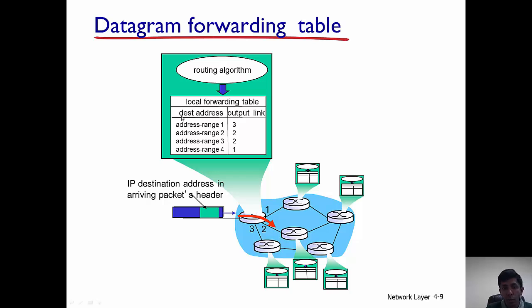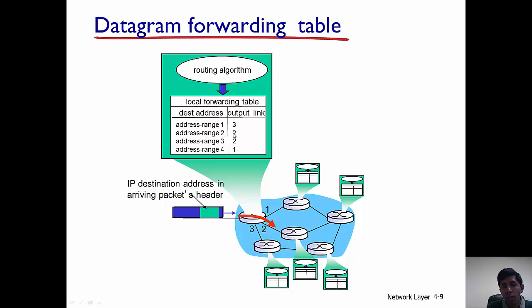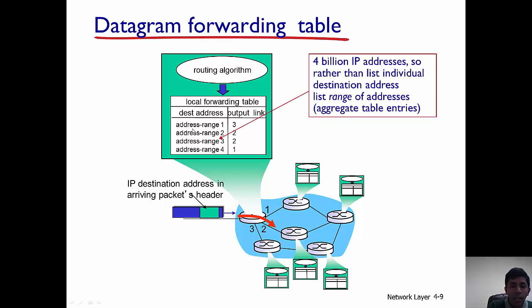Every router in the network maintains a table called the datagram forwarding table. The table looks somewhat like this, as shown in this green box. One column is the destination address range and the other column is the output link corresponding to that address range. For example, if a packet comes into this router and its destination address belongs to address range 1, the packet is going to be sent along output link 2.